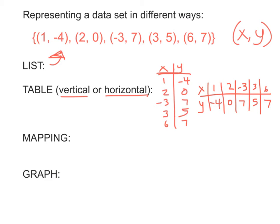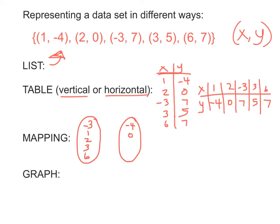Next, you might see what's called a mapping. A mapping uses ovals, typically. Your inputs are listed on the left-hand side — usually in numerical order from smallest to greatest. So negative 3, 1, 2, 3, and 6. Our outputs are negative 4, 0, 5, and 7. Notice this oval only has 4 values because 7 was listed twice in our data — we do not list 7 twice. So although there are 5 input values, there are only 4 output values, and that is okay.